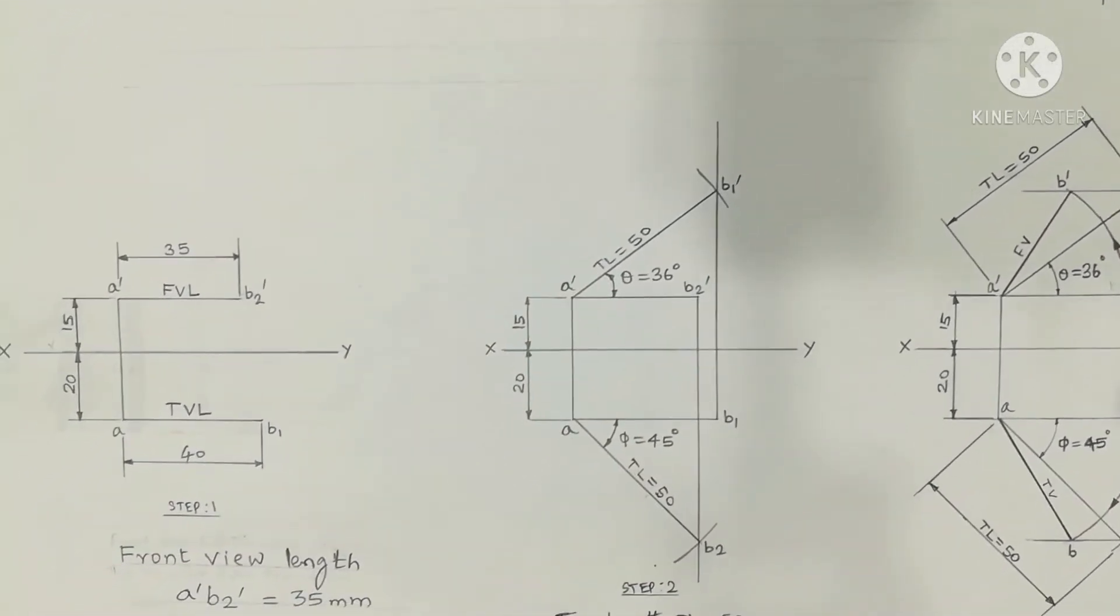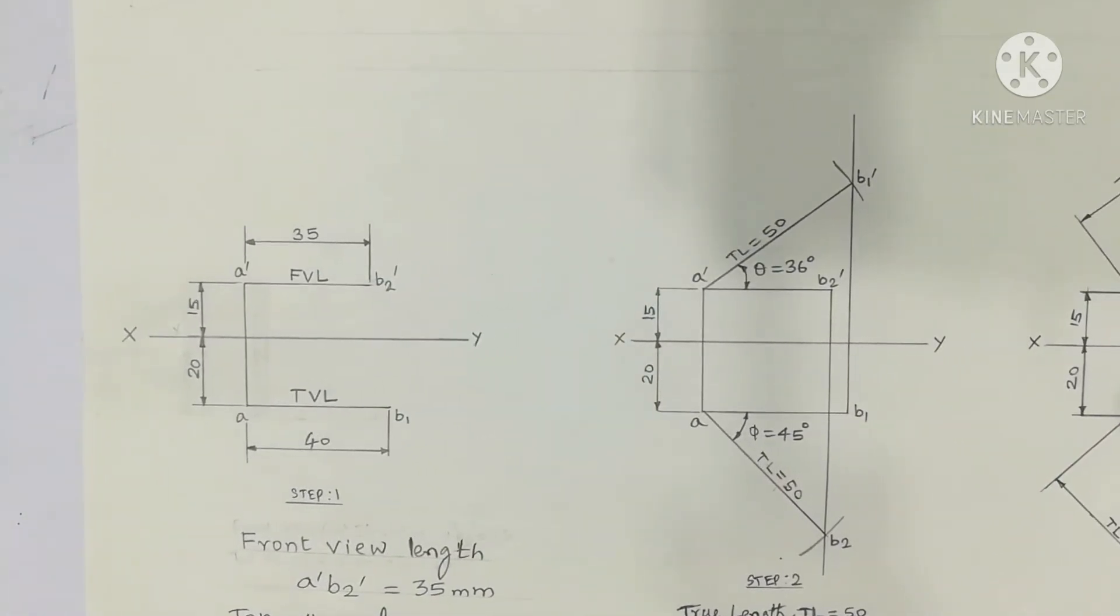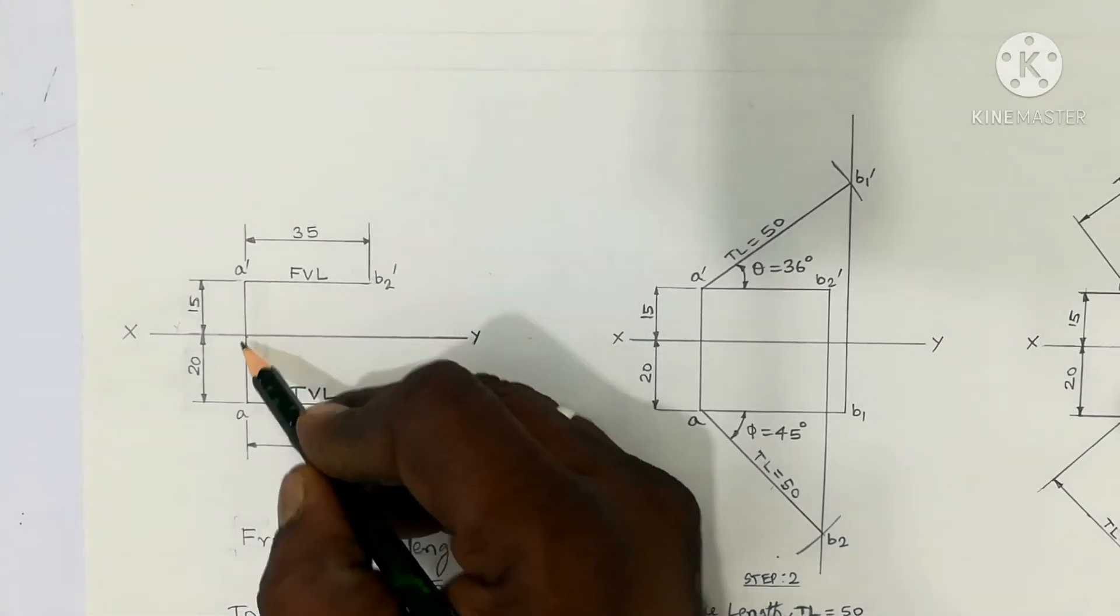This is the third step that is usually followed. Distance above HP: one end point A is 15mm above HP and 20mm in front of VP. Consider the distance, front view length and top view length.